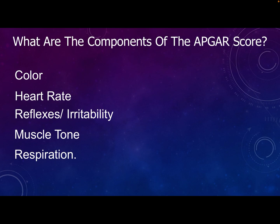What are the components of the APGAR score? Dr. Virginia Apgar suggested five components: color, heart rate, reflex irritability, muscle tone, and respiration. Ten years later, another American doctor suggested using the word APGAR to remember the score components.